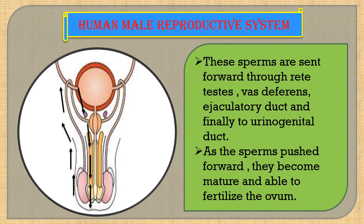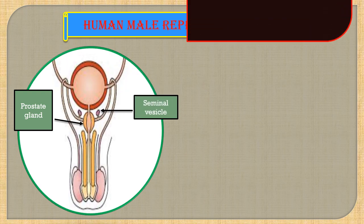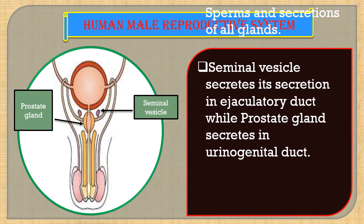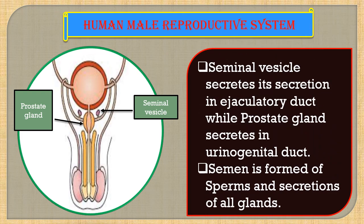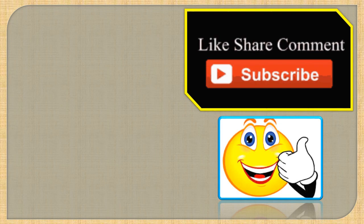Semen is actually made up of sperms and the secretions of the glands — that is seminal vesicle, Cowper's gland, and prostate gland. The secretions of all these glands together with sperms form semen. The seminal vesicle secretes into the ejaculatory duct, whereas the prostate gland and Cowper's gland secrete their secretions into the urinogenital duct. All the organs of the male reproductive system are paired except the urinogenital duct, penis, and scrotum.